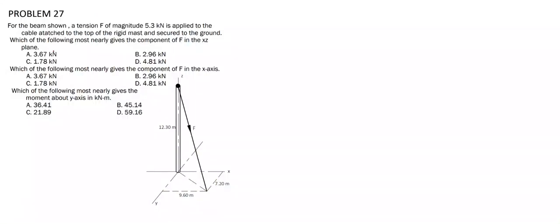For this problem, we are given a beam shown with a tension F of magnitude 5.3 kN that is applied to the cable attached to the cap of our gate mass and secured to the ground. We are tasked to find the component of F in the xz-plane, the component of F in the x-axis, and the moment about the y-axis in kilonewton meters.